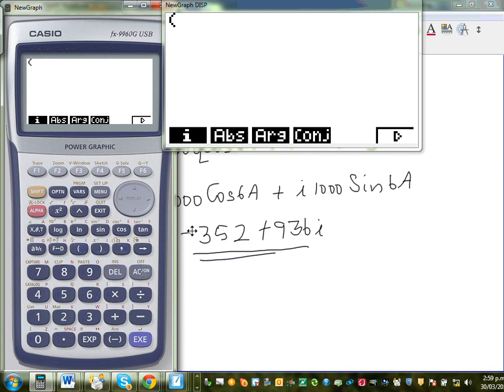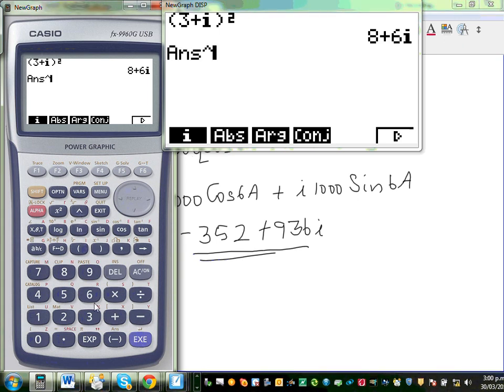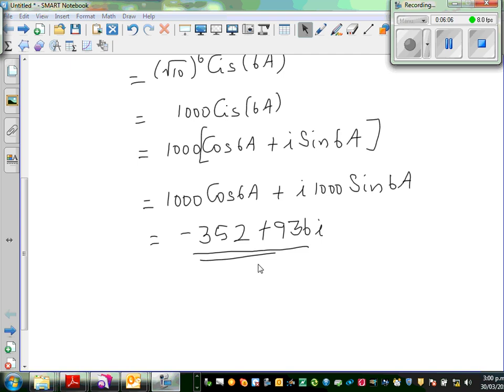So you have to do, if it is, I will first square it. It will be the 8th power. So 3 plus i squared. And then I will raise this by 3. Raise this by 3. Hopefully you will get the answer. So the same answer you will get. Minus 352 plus 936i is the answer on the calculator.